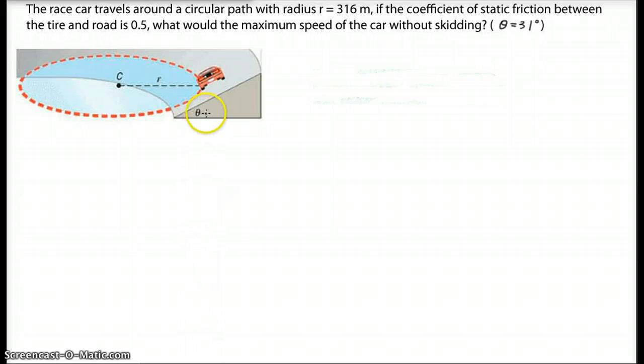So the angle here is theta equals 31 degrees. The question gives you the coefficient of static friction. And then the car can travel at a certain speed, but there is a range. For example, if the car travels too slow,